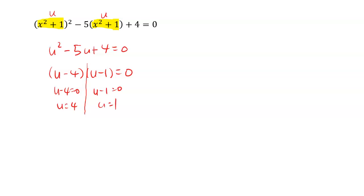Therefore, you have something more to work with. Right here is where a lot of people get fooled. They think the answer is 4 and 1, and then you get it wrong because your u is something that you developed in order to solve this. The question is really asking for the value of x, and we didn't get the value of x yet, so we have to go further.